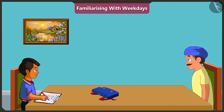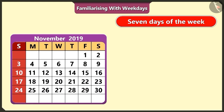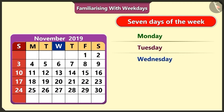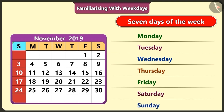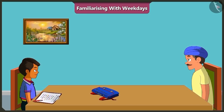Hey Chotu, what happened? Uncle, you told me about the seven days of the week — Monday, Tuesday, Wednesday, Thursday, Friday, Saturday and Sunday. But today my teacher said that there will be a drawing period tomorrow and we should bring a colour box. But what day of the week is tomorrow? I don't understand. Please tell me, uncle.